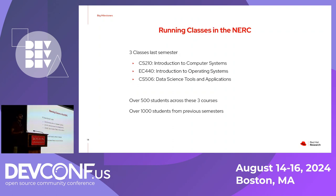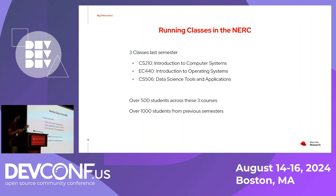This was the first year we ran courses in the New England Research Cloud and it was successful. We ran three classes — CS210, EC440, and CS506 — two systems courses and a data science course. Across these three courses we had over 500 students. From previous semesters running on AWS we had over 1,000 students, so we've now had almost 2,000 students that have successfully completed their courses in a cloud environment utilizing OPE.